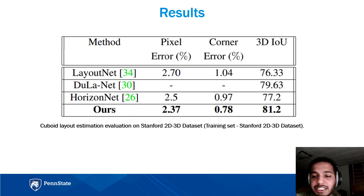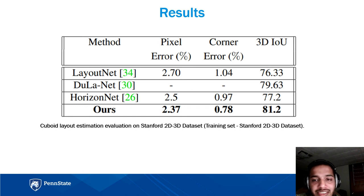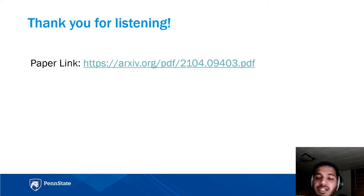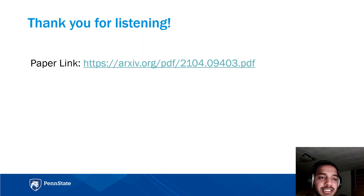Our second benchmark dataset is the Stanford 2D-3D dataset, which is more challenging because it has more occlusions on the floor boundaries, as it is captured in large-scale indoor environments. Looking at the 3D IOU figure, our method outperforms other methods by approximately 4% on this dataset as well. Thank you for listening. You can find more details about our work by following this link, and if you have any further questions, please don't hesitate to contact us.